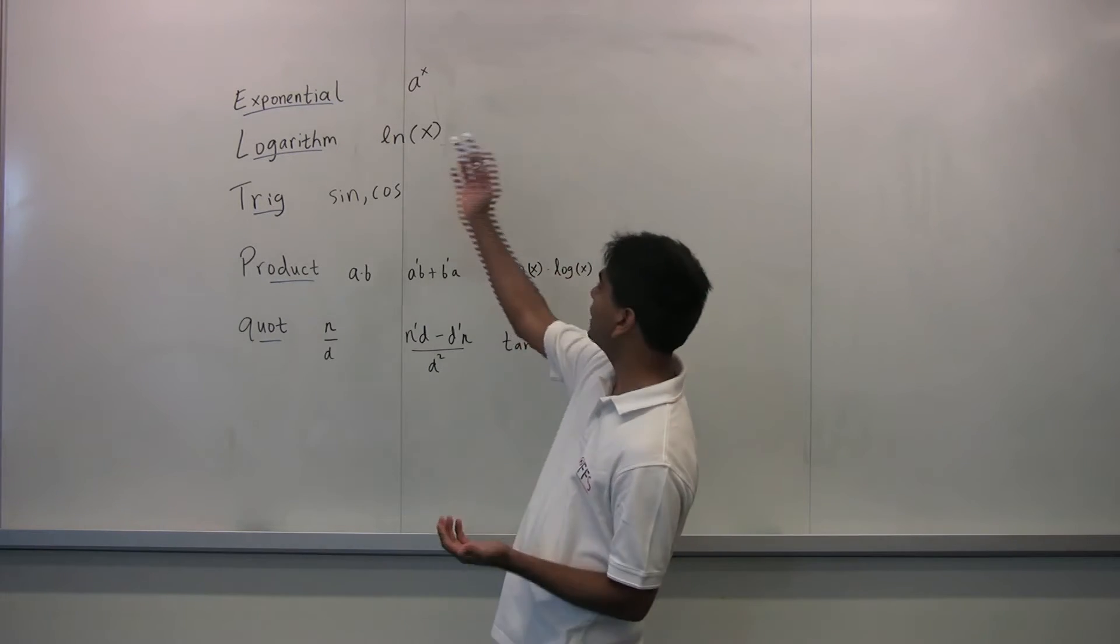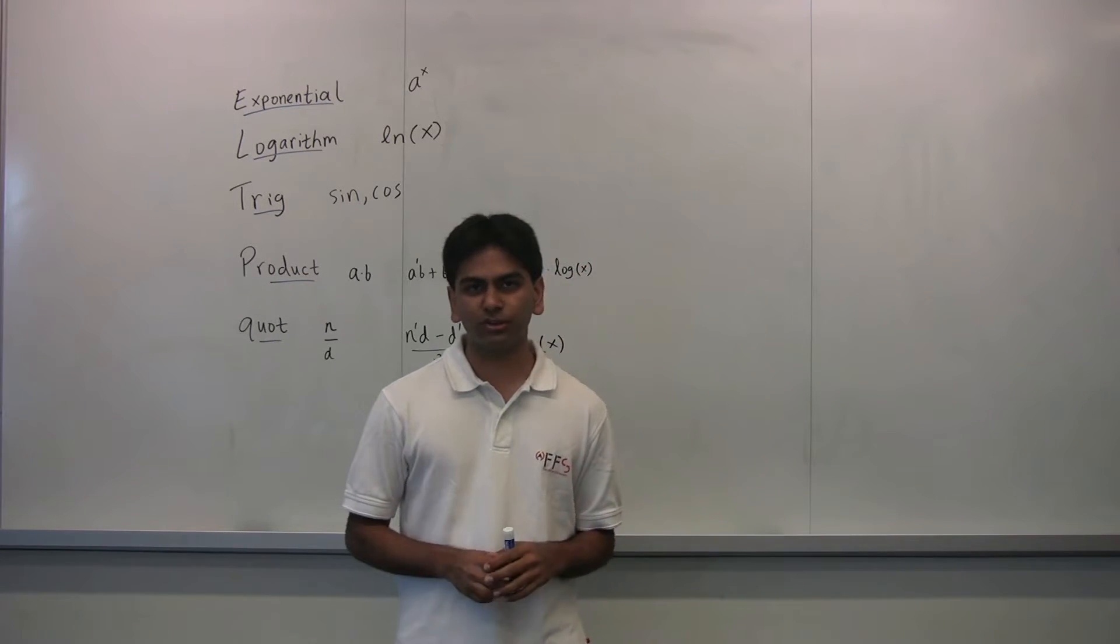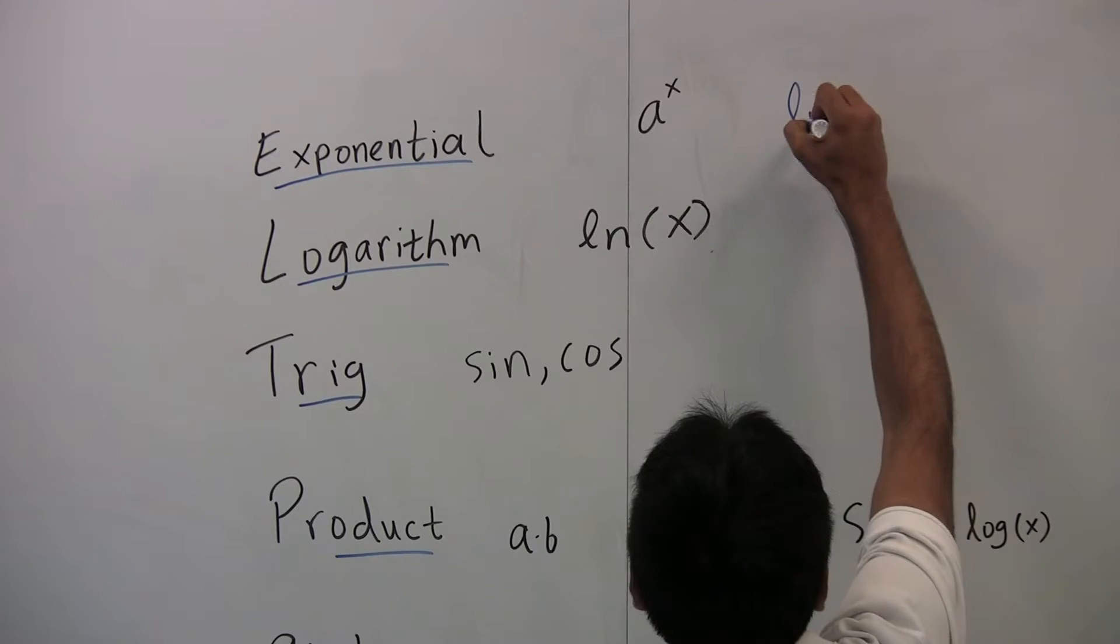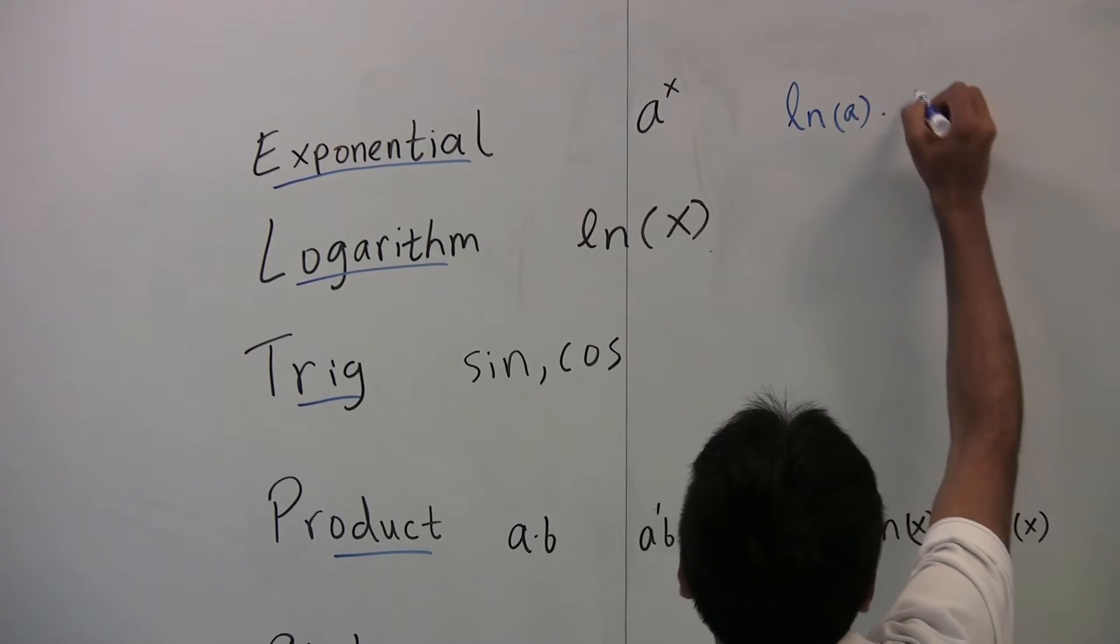So let's say you're given an exponential function, a to the x. What's the derivative of a to the x? Well, the answer is simply the natural log of a times a to the x.